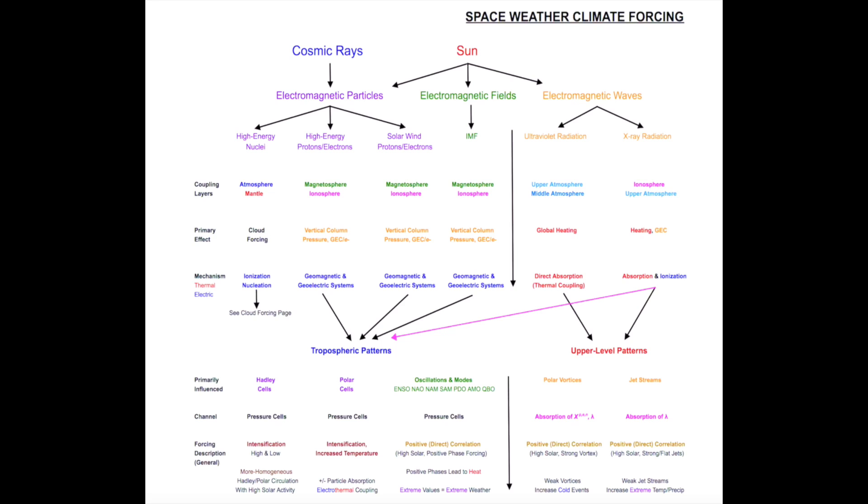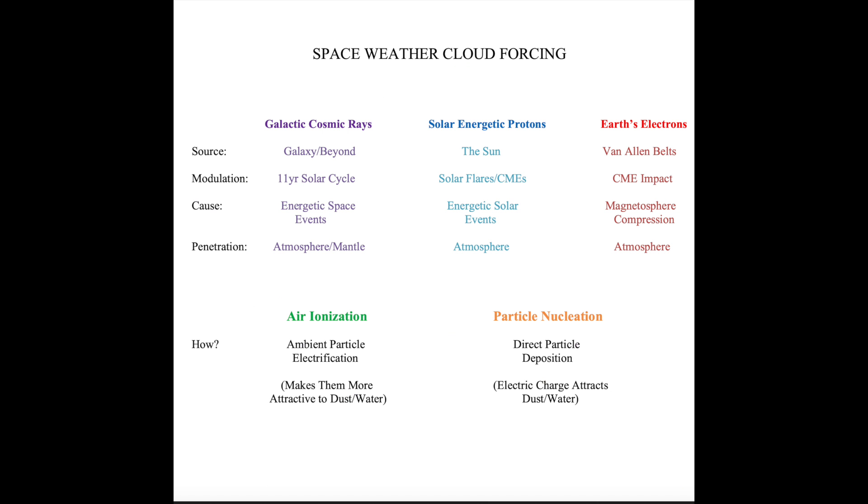Some of you may remember this graphic from Weatherman's Guide to the Sun. All the different ways the sun impacts Earth's atmosphere, and some of the various pathways. We actually had secondary graphics as well, like the one specifically on cloud forcing, which involves electrons, protons, and cosmic rays, which are modulated by solar activity.